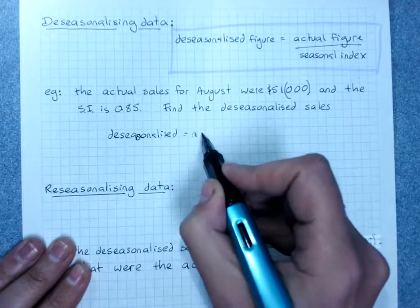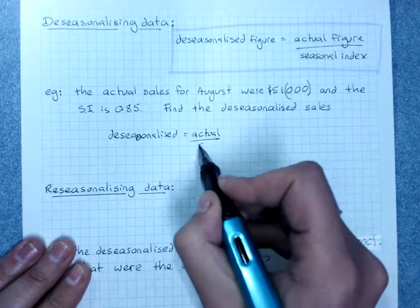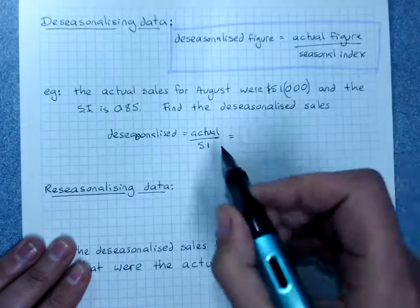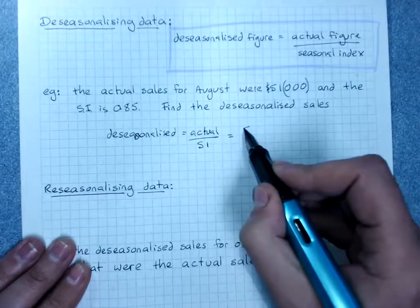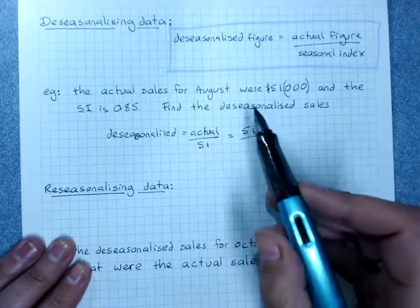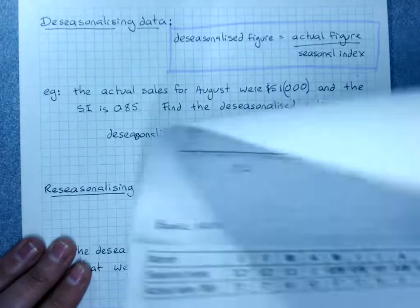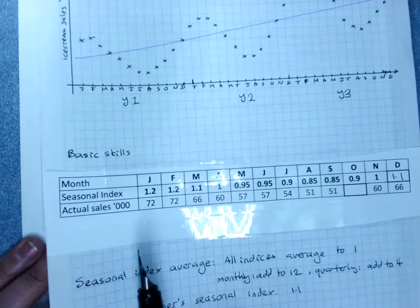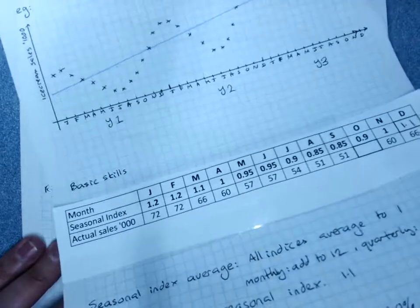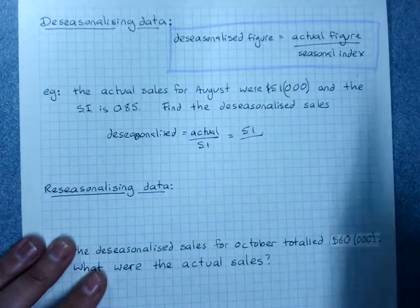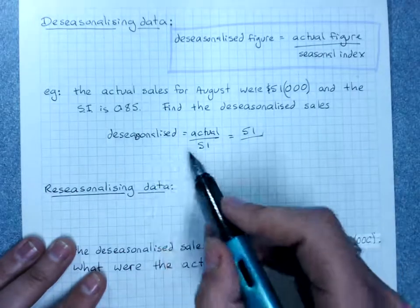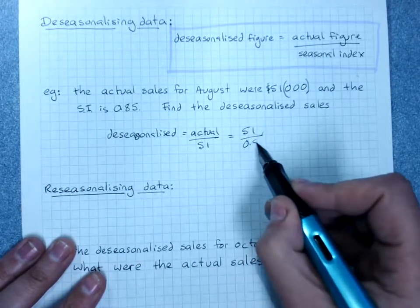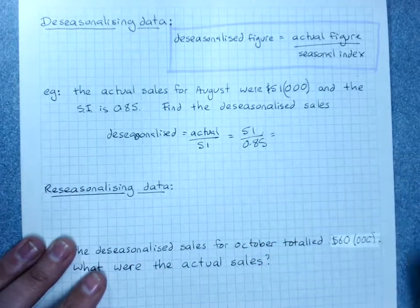De-seasonalized will be actual divided by SI, seasonal index. The actual sales were 51,000. Now because we're going back to the data and the thousands are over here, we don't need to put the thousands in. And we divide by the seasonal index of 0.85. Grab your calculator.